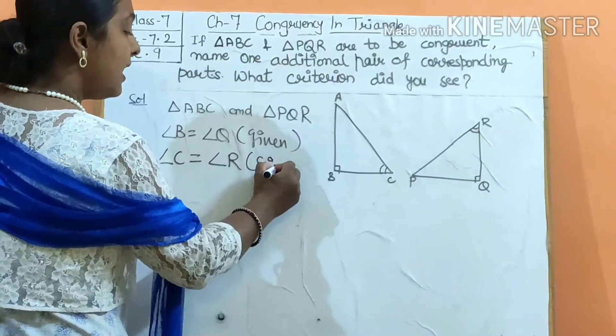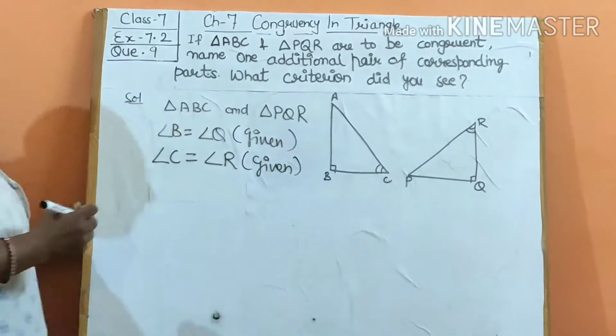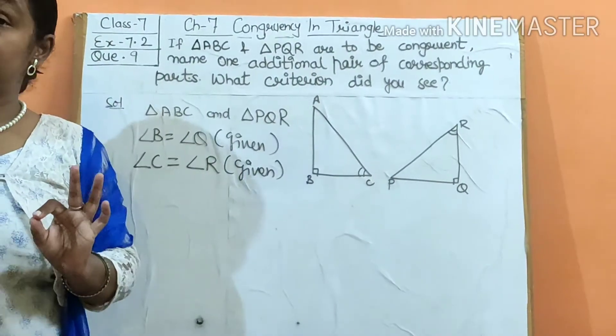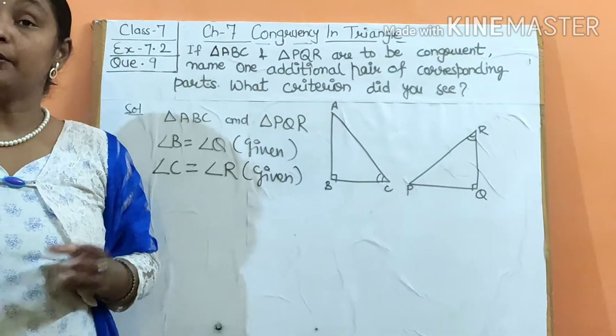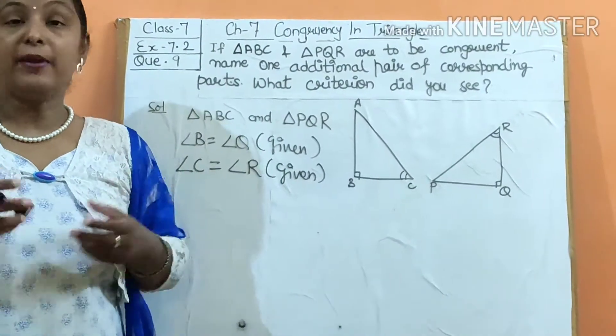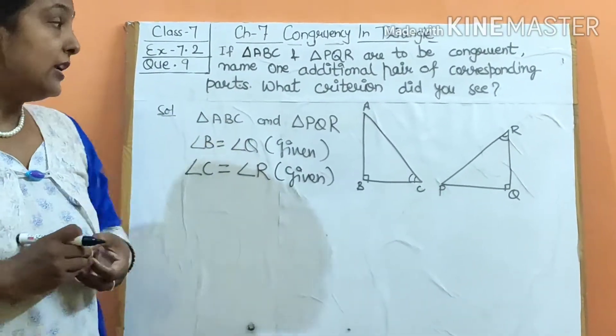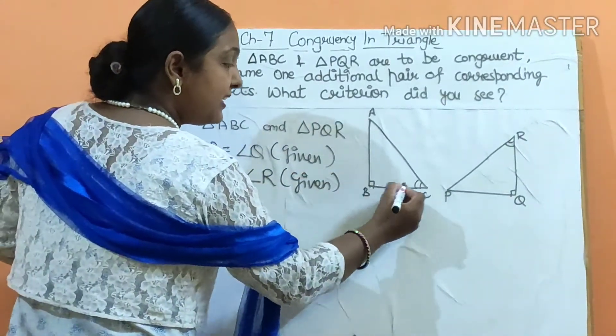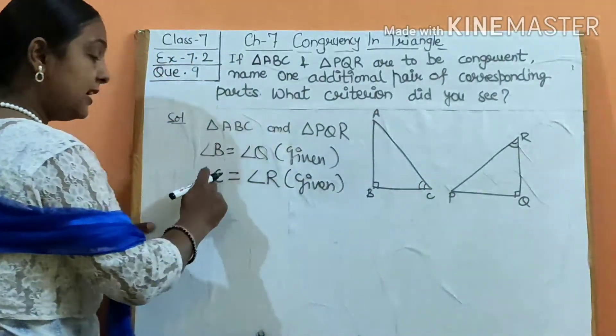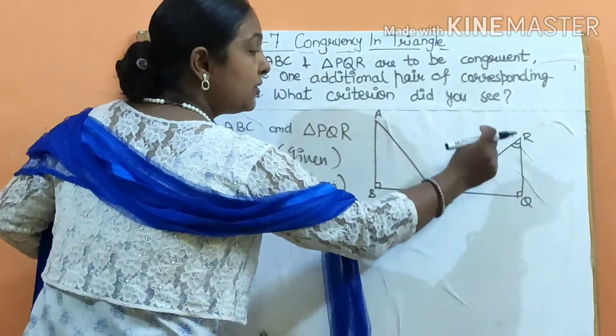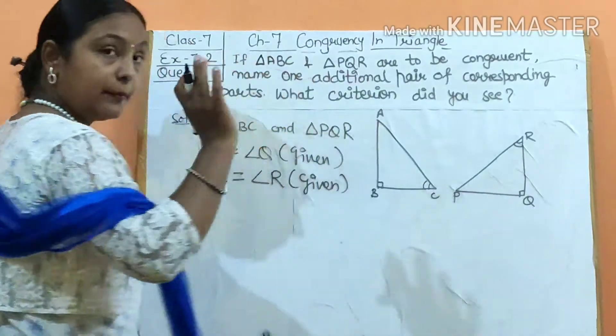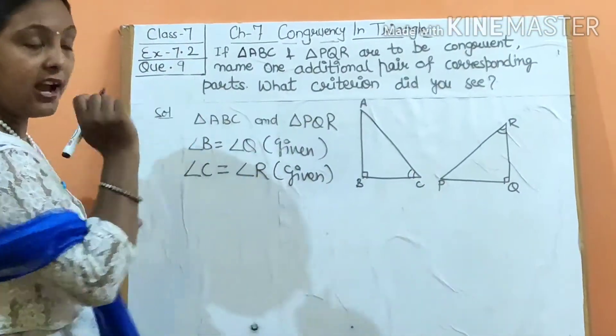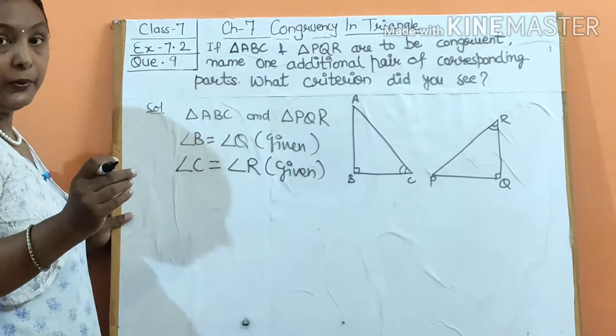So, this is triangle PQR. And we have angle A, B, C and triangle PQR. BC side has both angles, angle B and angle C. And here on RQ side, angle Q and angle R are formed. So the including side BC and RQ are also equal by the ASA criterion.